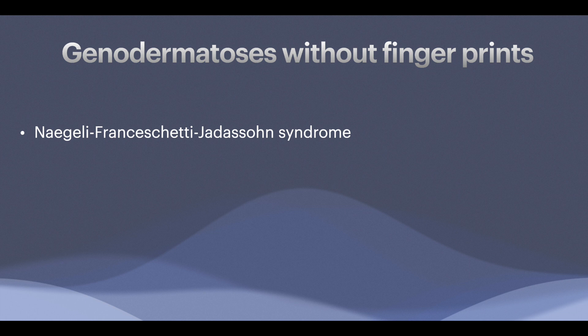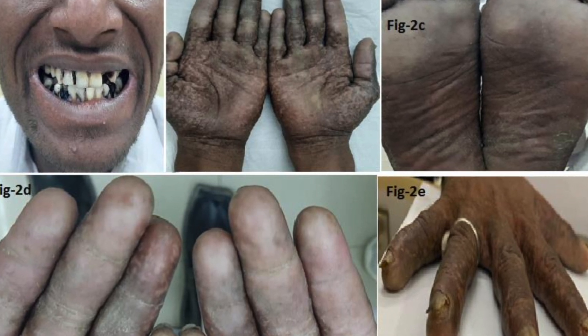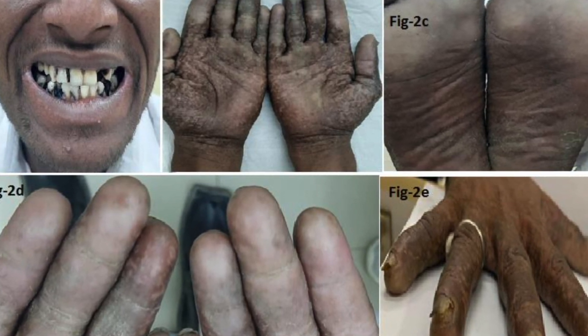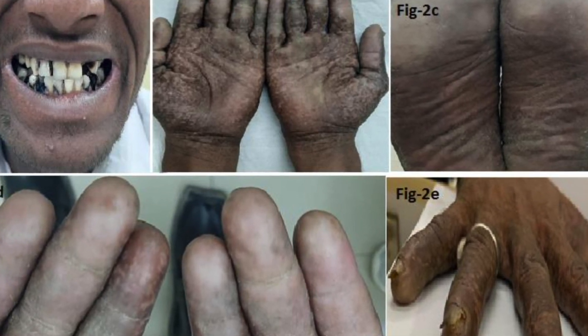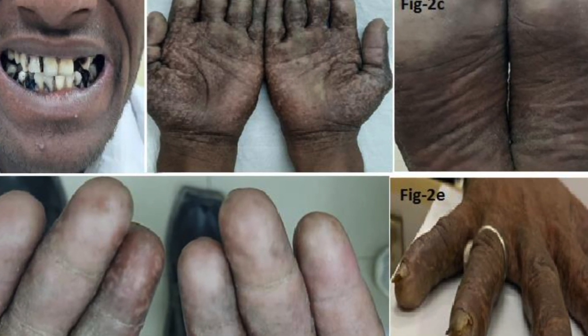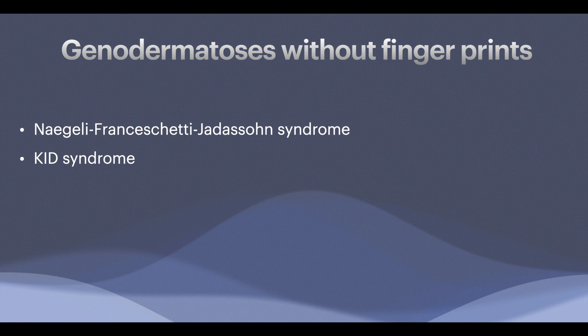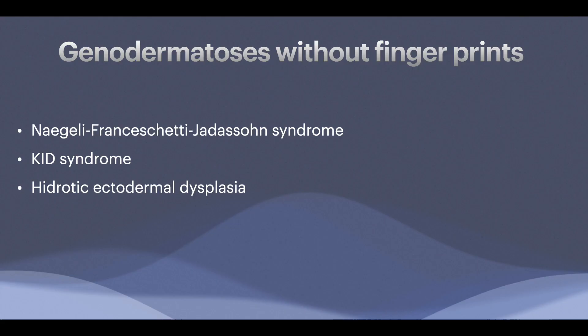Naegeli-Franceschetti-Jadassohn syndrome is an autosomal dominant disorder characterized by brown reticulate pigmentation on the trunk and upper extremities, heat intolerance, hyperkeratosis of the palms and soles, and absent dermatoglyphics. In KID syndrome — keratitis, ichthyosis, and deafness — there is also absent fingerprints.